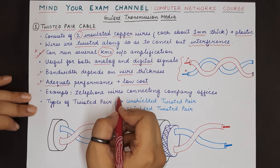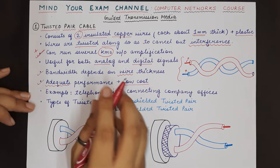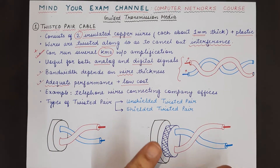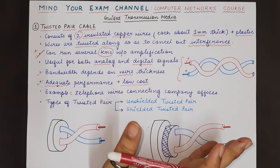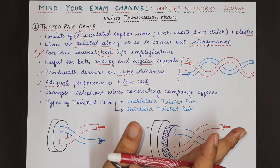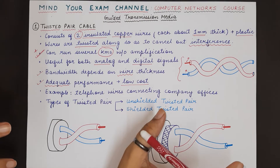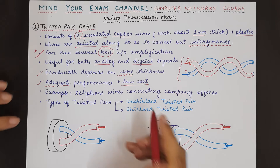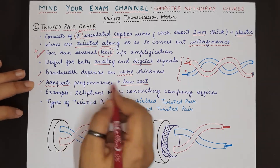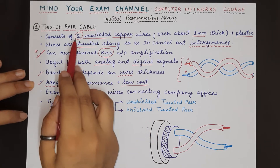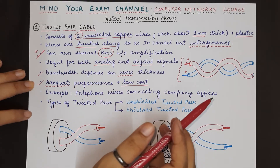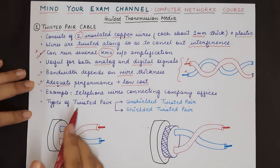The most common example of twisted pair cable is in the case of telephone wires that connect different company offices, or sometimes telephone wires that connect company offices to specific locations. Telephone wires are a very common example of the use of twisted pair cables.